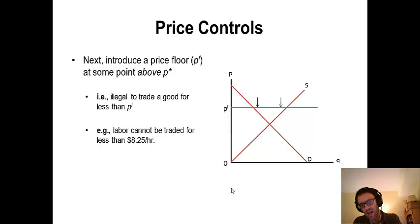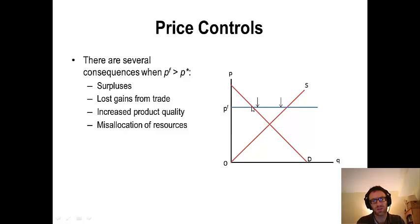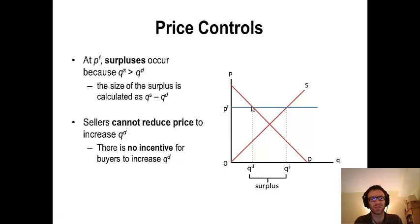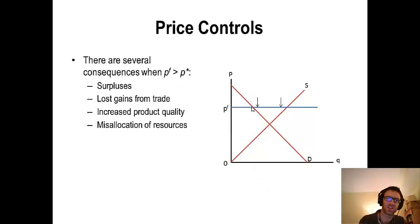As you can tell, at this price floor PF, the quantity supplied is way out here, and quantity demanded is now relatively low. So there's going to be a surplus. In addition to the surplus, there's going to be lots of other consequences such as increased product quality that result, also some sort of misallocation of resources and lost gains from trade. We're going to focus on the first two for the sake of time.